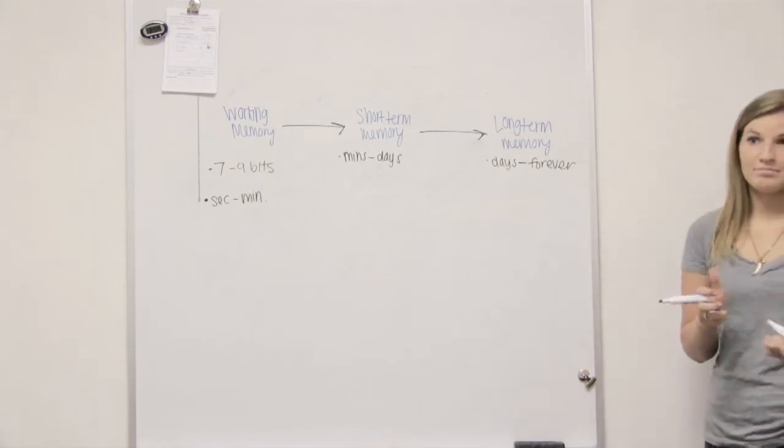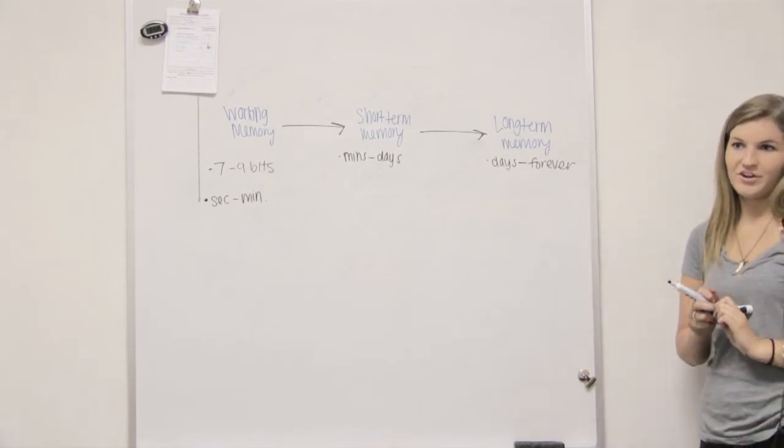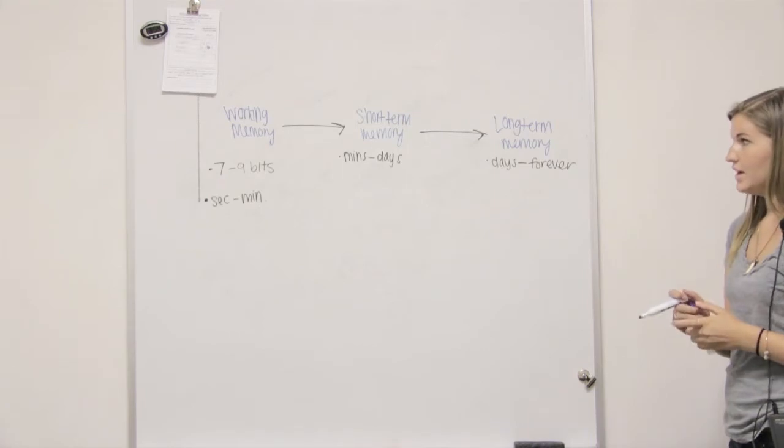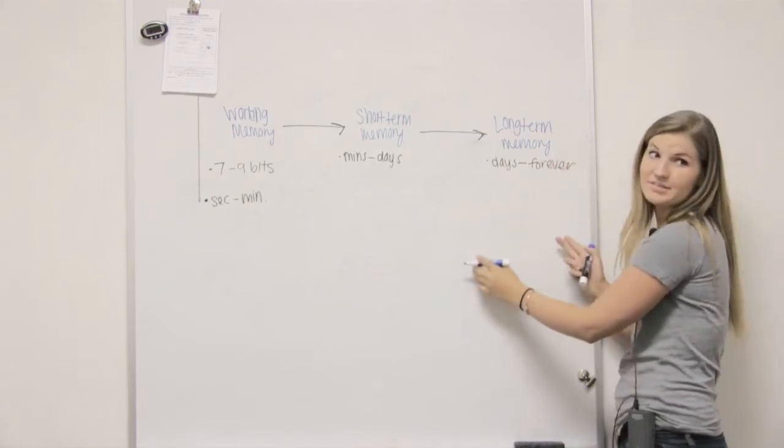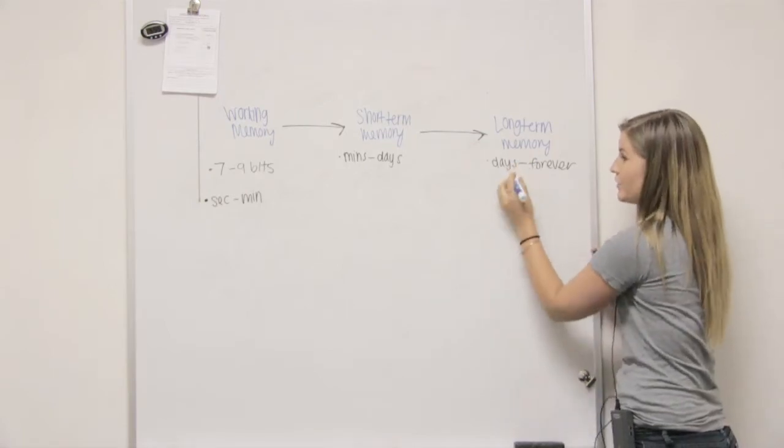Kind of like your name. Probably won't ever forget your name. Or like riding a bike. So that brings us to a point that there's two different types of long-term memory.